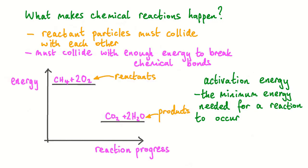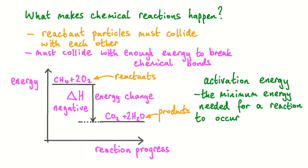In the reaction of methane and oxygen, the chemical energy stored in the reactants is greater than the chemical energy stored in the products. The difference between the energy level of the reactants and the energy level of the products is called the energy change for this reaction, often labelled as delta H. The energy change for the reaction of methane with oxygen is negative, as heat is released to the surroundings. A reaction where heat is released to the surroundings is described as an exothermic reaction. All combustion reactions are exothermic.